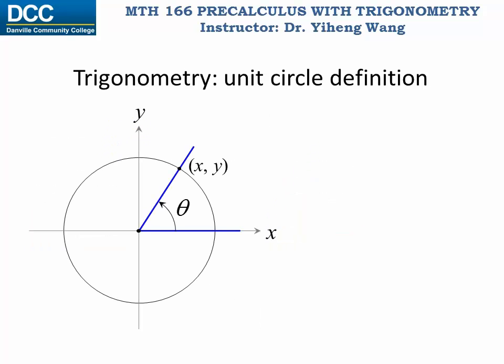Now we are ready to use the unit circle to define the six trigonometric functions for angle theta. Sine theta is simply y. Cosine theta is simply x. Tangent theta equals sine theta over cosine theta, which is y over x. Tangent theta is undefined if x is zero.